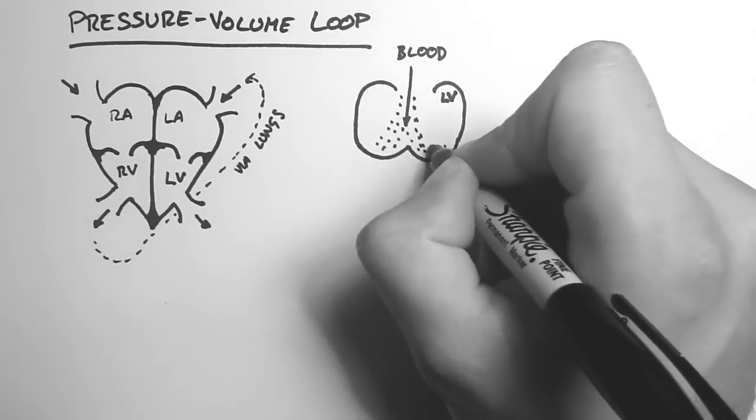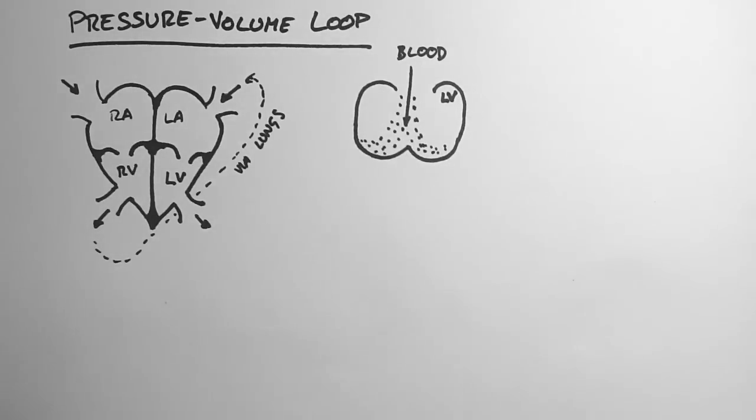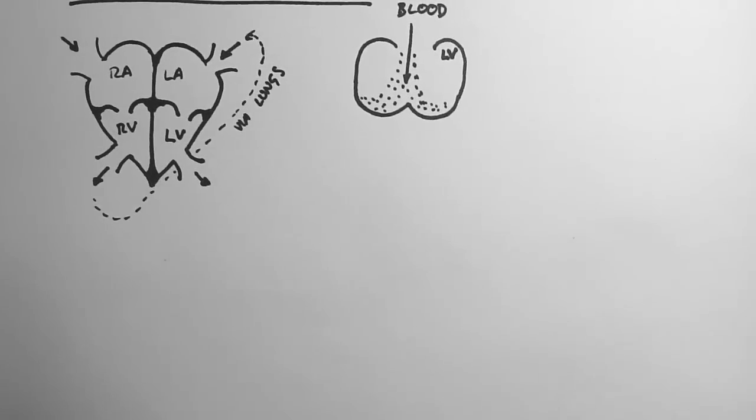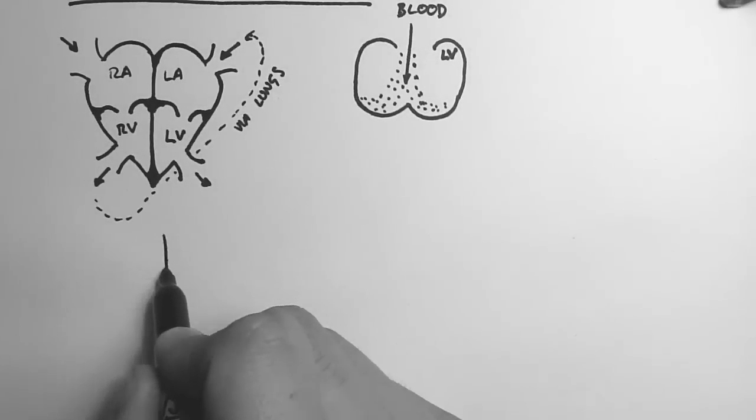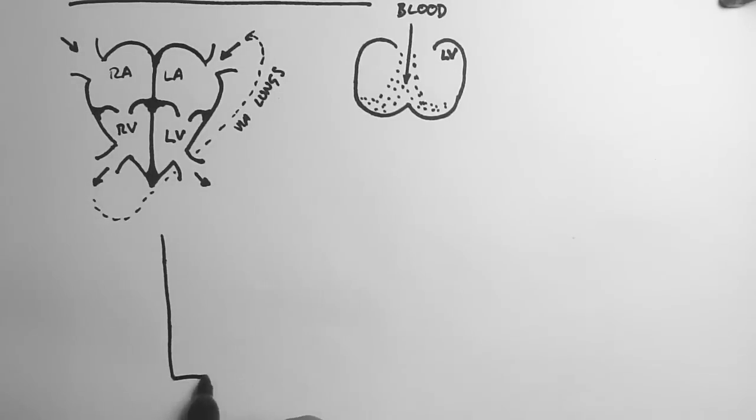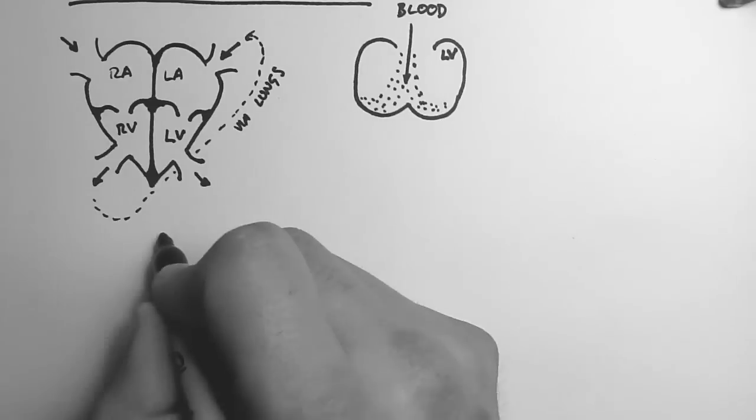So the valve at the bottom of the left ventricle is closed and the one at the top is open. The valve at the bottom is the aortic valve, and the valve at the top is the bicuspid valve or the mitral valve.